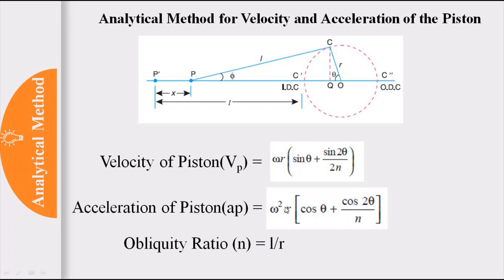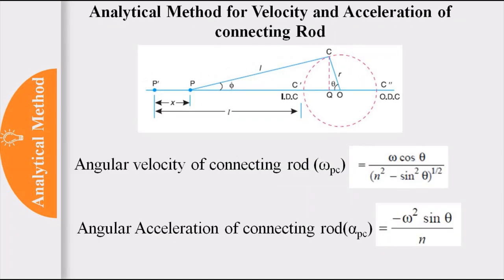The acceleration of the piston is: Ap = rω²(cosθ + cos2θ / n). For the connecting rod, which moves angularly, the angular velocity is: ωpc = ω·cosθ / √(n² − sin²θ), and the angular acceleration is: αpc = −ω²·sinθ / n.